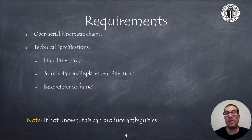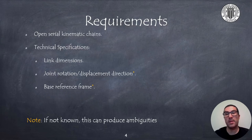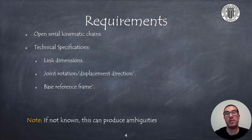In order to apply the methodology proposed by Denavit-Hartenberg, we must take into consideration that it only applies to open serial kinematic chains, no matter the number of degrees of freedom of the robot. We must know the dimensions of each link and also the direction of the rotation or displacement of joints. In addition, we must know the base reference frame and where it is located. This data can be obtained from the technical specifications of the manufacturer.